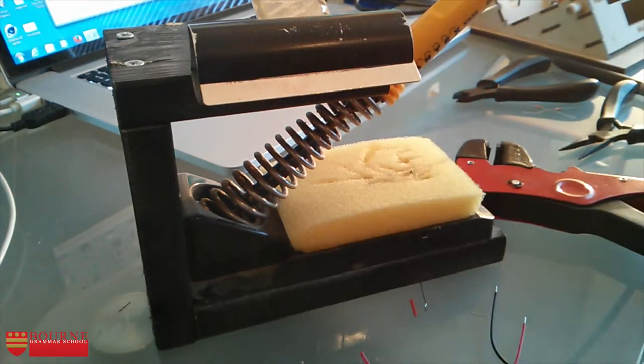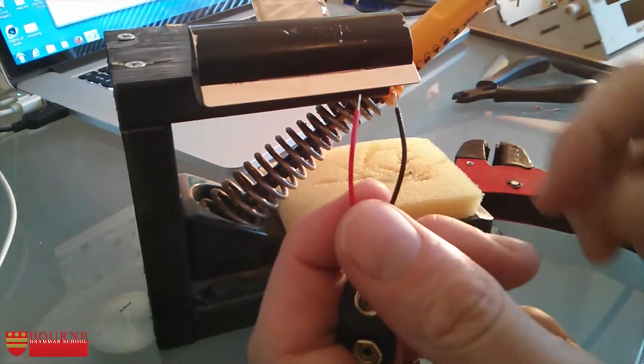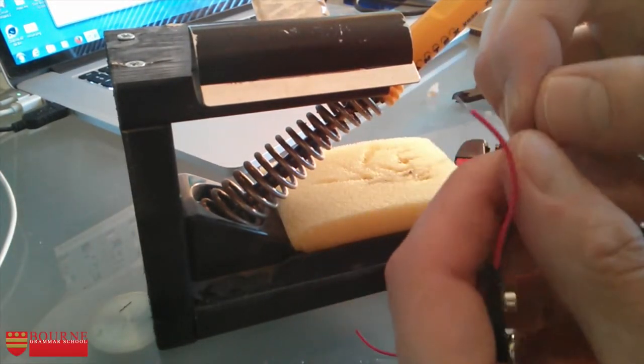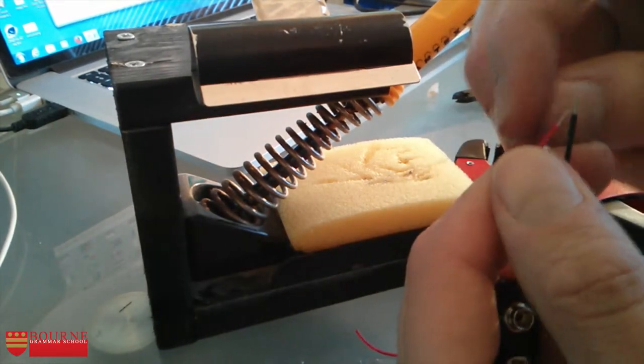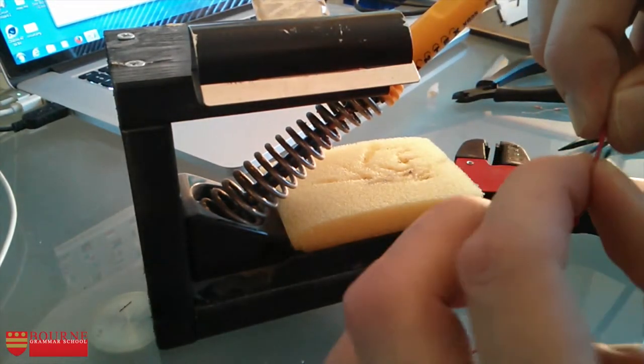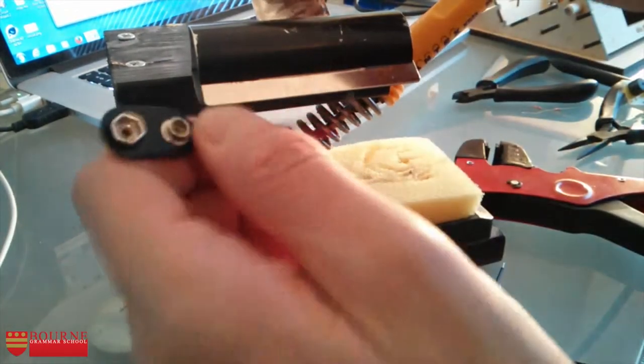You can see that those wires have all become separated and no amount of twisting and turning is really going to get them to stay correct. So what I'm going to do now is take my battery snap, give those wires a little bit of a twist again to try and keep them all together, and place them in my bulldog clip.